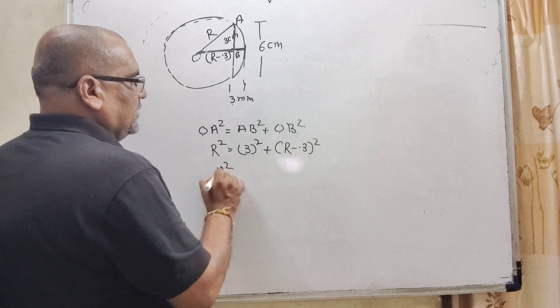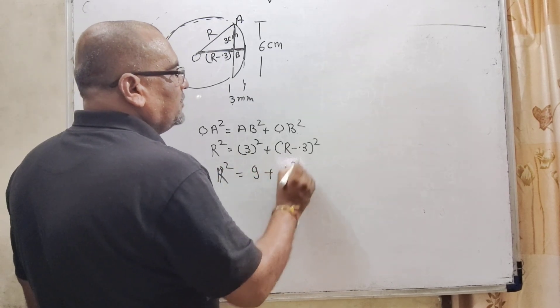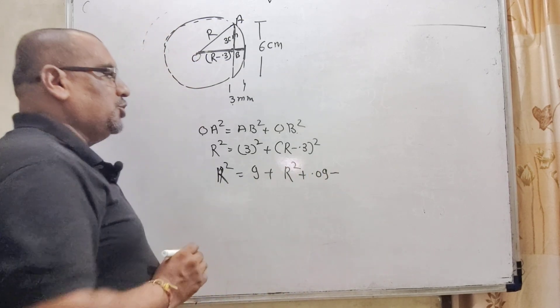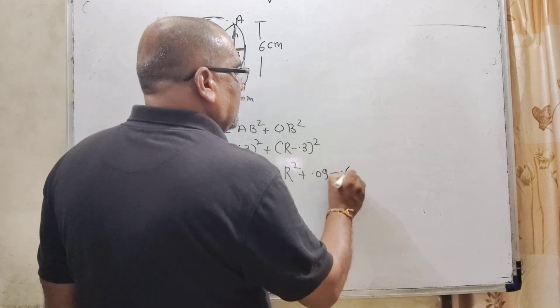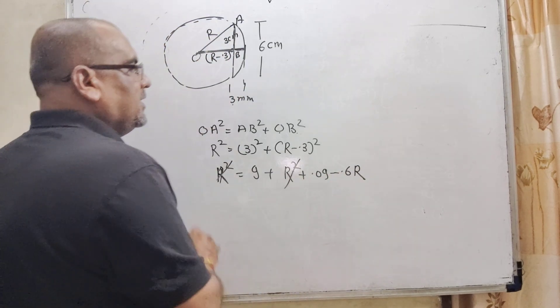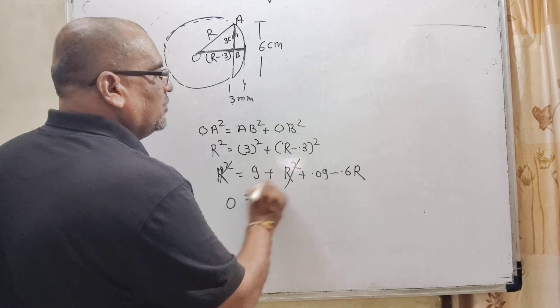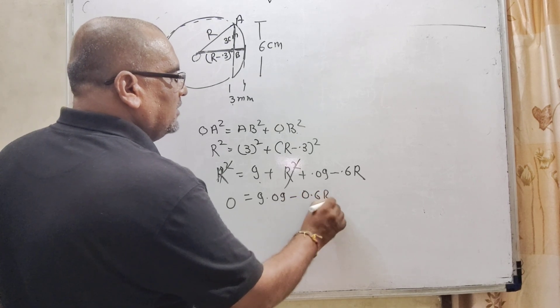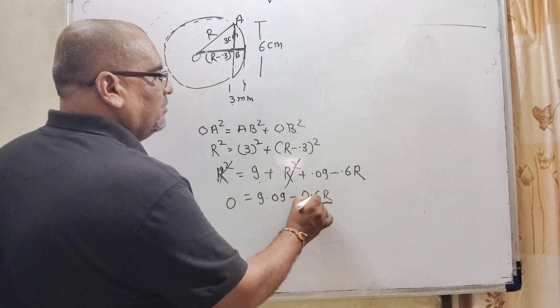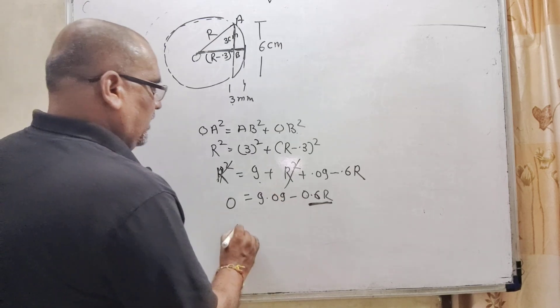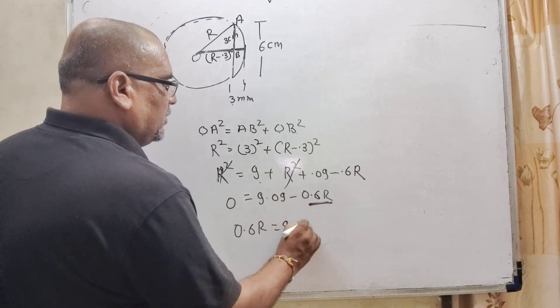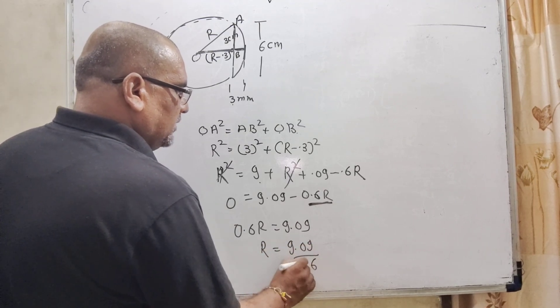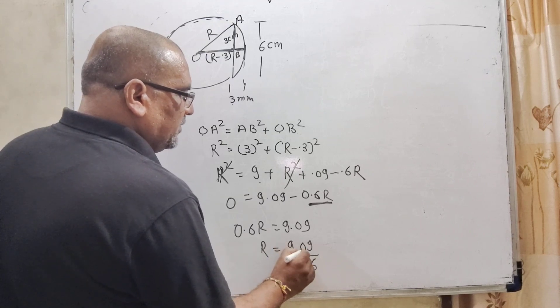So, R² = 9 + R² + 0.3² which is 0.09 minus 2AB which is 0.6R. R² R² cancel out. So, 0 = 9.09 - 0.6R. Transposing, 0.6R = 9.09.